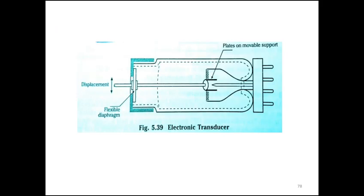You can see the input — one diaphragm is a flexible diaphragm. Displacement, it may be some movement, it may be some force, it may be some torque. That is sensed by the diaphragm. Again, that signal is processed with the help of plates on a movable support. Two plates are electronic plates with electromagnetic conduction. That is taken by these electromagnetic conduction plates, and these are suitably processed and we get the output.